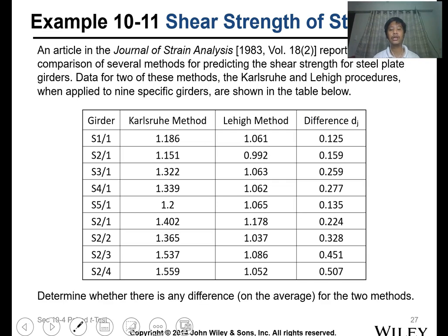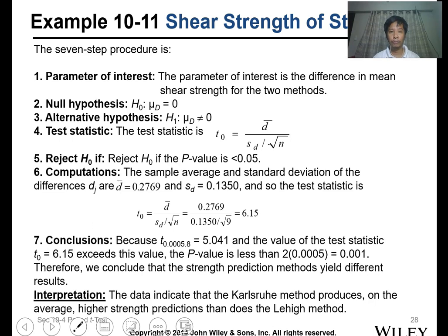Determine whether there is any difference on the average for the two methods. This is the seven-step procedure for hypothesis testing. The parameter is the difference we want to know. The null hypothesis is that there's no difference, meaning the mu difference is equal to zero, and the alternative is that this is not equal to zero.